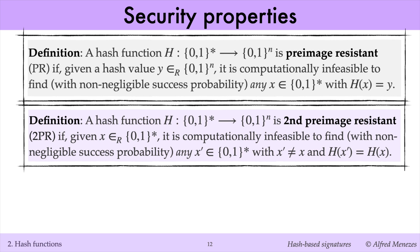The second important security property of hash functions is second preimage resistance. Given a randomly chosen message X, it should be computationally infeasible to find, with non-negligible success probability, a second message X′ different from X, with the same hash as X.